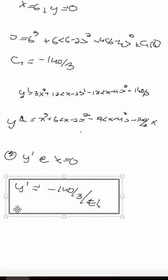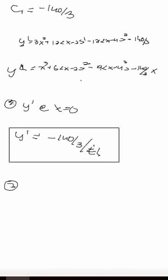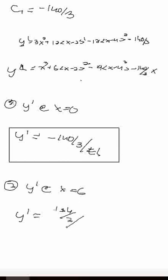For question 2, determine the rotation at the right support, which is the slope Y' at X equals 6. Substituting: Y' equals 3 times 6 squared plus 12 times (6 minus 2) minus 12 times (6 minus 4) squared minus 140 over 3. The slope at the right support equals 184 over 3, divided by EI.